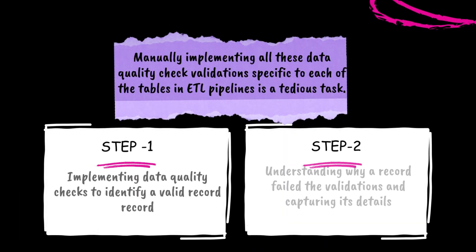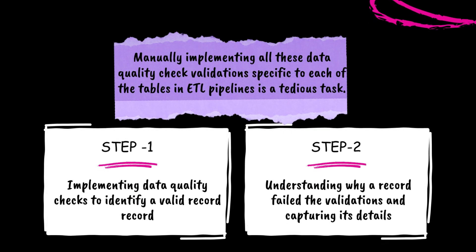Manually implementing all these data quality check validations specific to each of these tables in ETL pipelines is a tedious task. Implementing data quality checks to identify a valid record is only step one. The next important step is understanding why a record fails the validations. Capturing details about why a record is considered invalid is crucial for clear understanding of data quality.